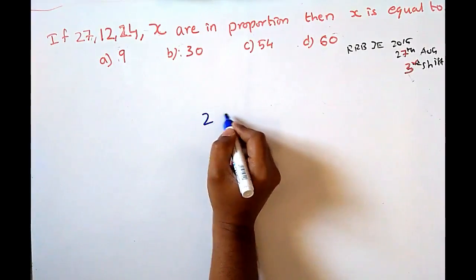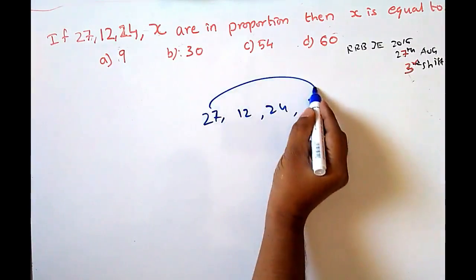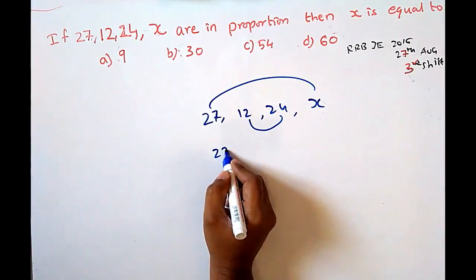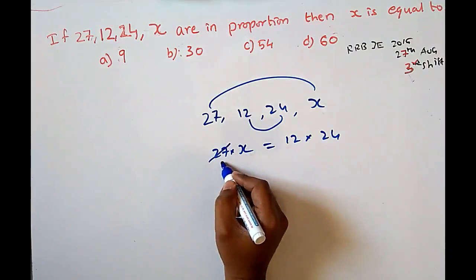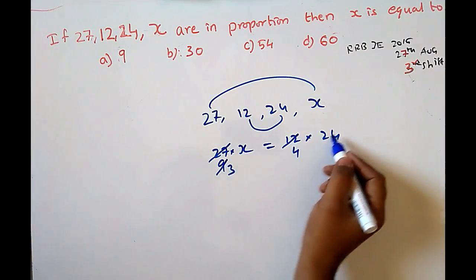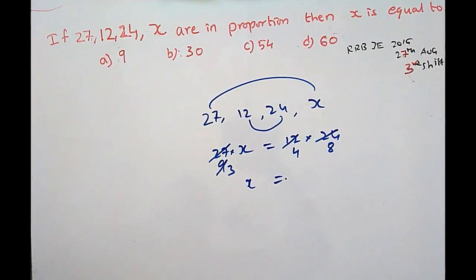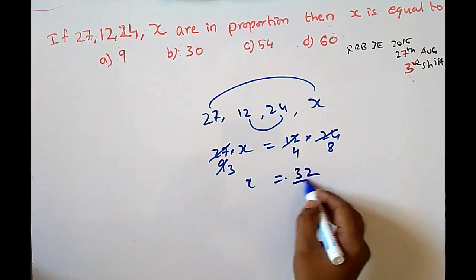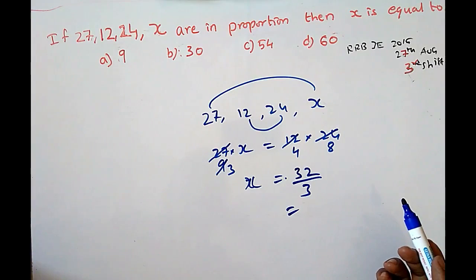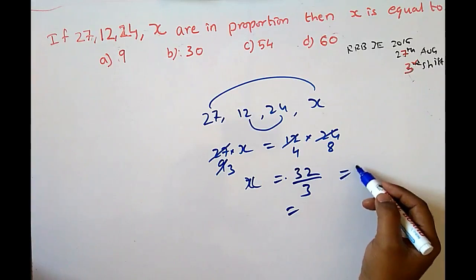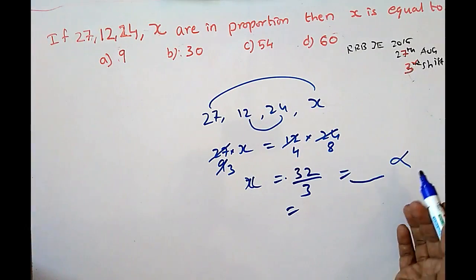If 27, 12, 4, 24, x are in proportion — that is 27, 12, 24, x — the product of extremes equals the product of means: 27 × x = 12 × 24. So 27x = 288, giving x = 288/27 = 32/3. Here the answer is not available in the options, which appeared in the RRBJE 27th August third shift. You can come across these kinds of problems, so you shouldn't panic. If you don't get an answer matching the options, there might be a typo error in the question.